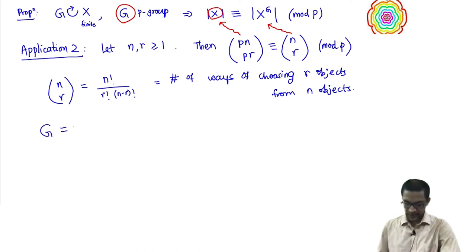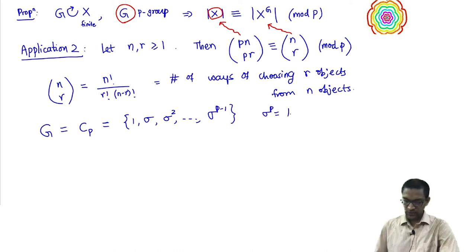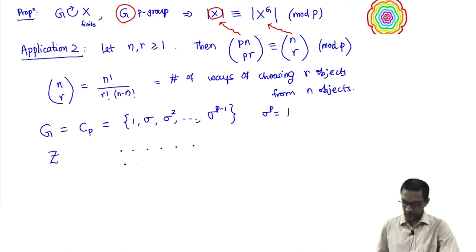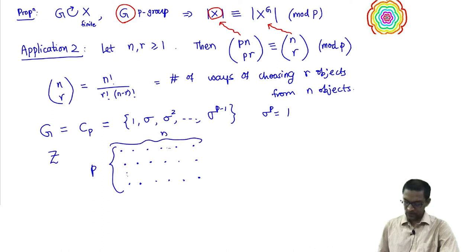For a start, like last time, let us pick the simplest cyclic group of cardinality p as our p-group. This is just {1, σ, σ², ..., σ^(p-1)}. Now I need to construct a set whose cardinality is pn choose pr. First, let us construct a set of cardinality pn as follows: think of a rectangular grid of dots with p rows and n columns. This has pn dots in all.